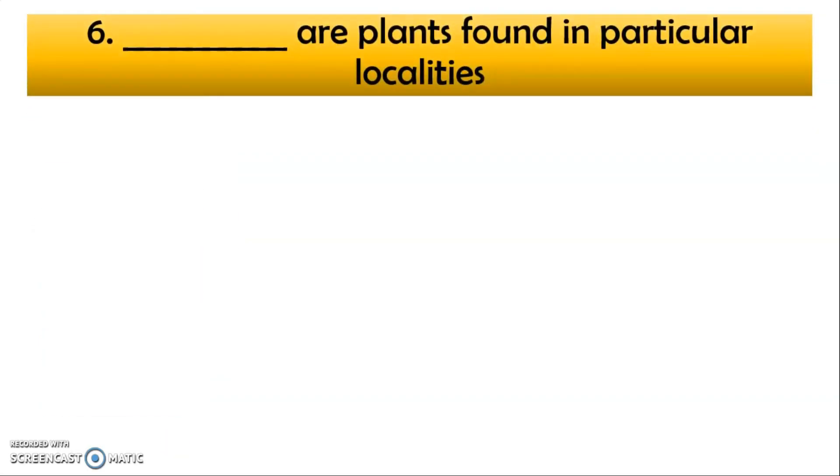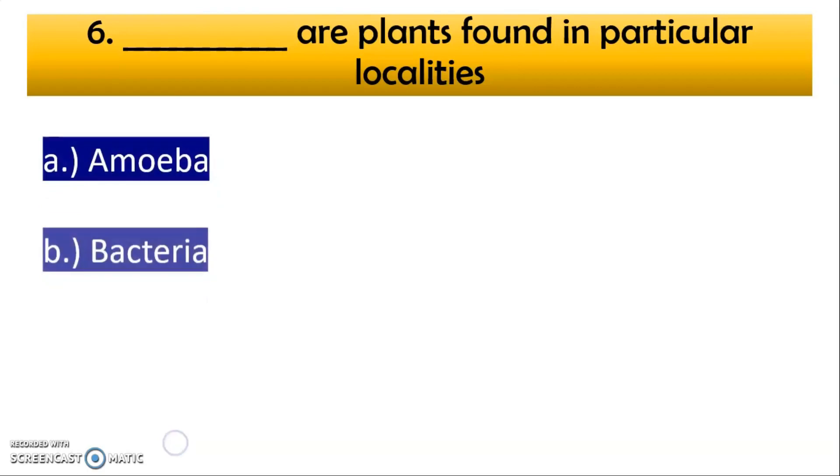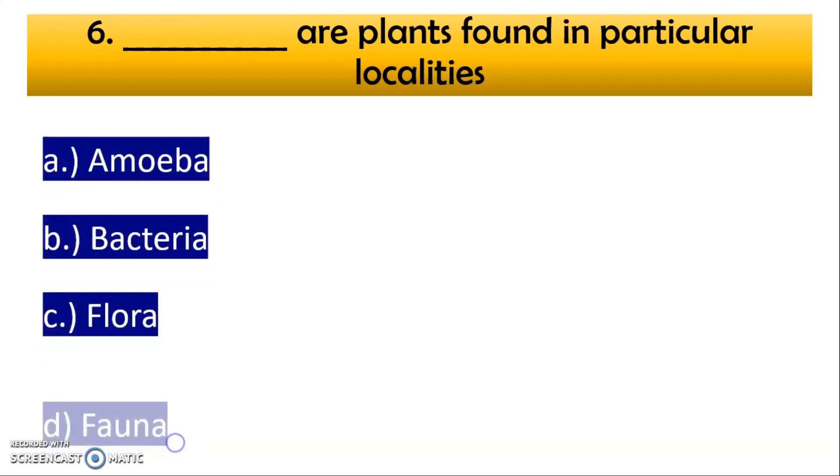Sixth question, which are the plants found in the particular localities? A option amoeba, B option bacteria, C option flora and D option fauna. Correct is option number C, flora.